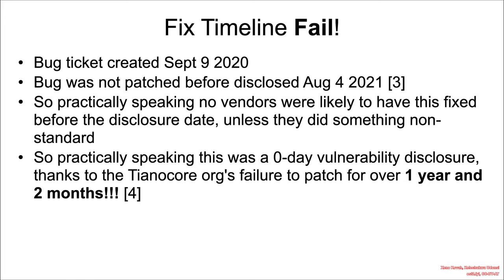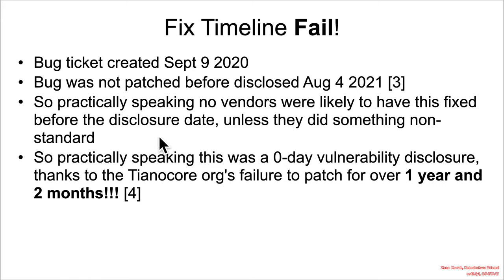At this point I need to point out the epic fail that was the fix of this vulnerability. If we go back and look through tickets, we can see this was reported September 9th, 2020, and the bug was not patched before it was disclosed at a security conference on August 4th, 2021. They were still debating about it almost a year later, basically saying, oh well, this is public now, maybe we should really do something about this. Practically speaking, most vendors would not have actually fixed this by that point. Functionally, this was a zero-day disclosure because it was not yet fixed.